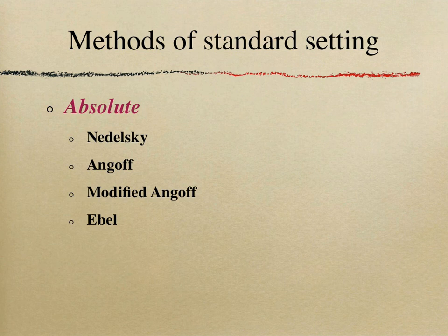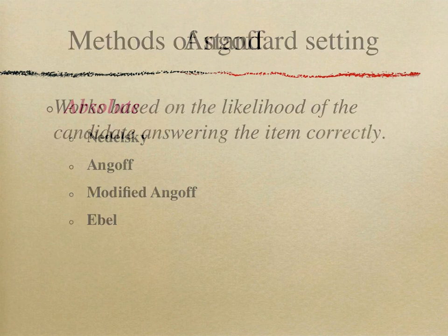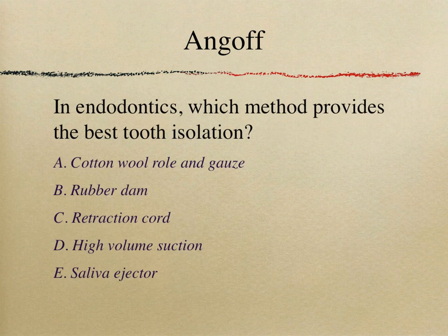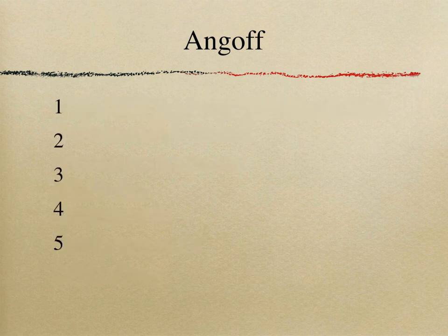One of the most famous methods is the Angoff. The Angoff is a variation of the Nedelsky method, developed to compensate for the fact that Nedelsky can only be used for SBA and MCQ questions. Now I want to ask a very difficult question: given this SBA question, what is the likelihood that a borderline candidate answers it correctly — from 1 to 100? That's a really difficult question, and that's actually how the Angoff method works.